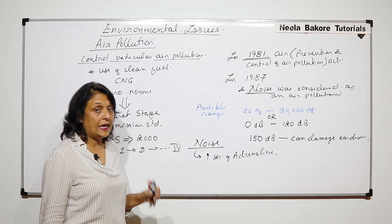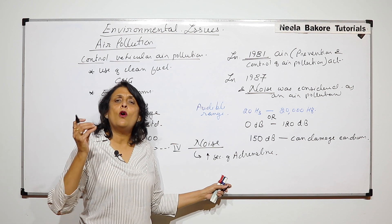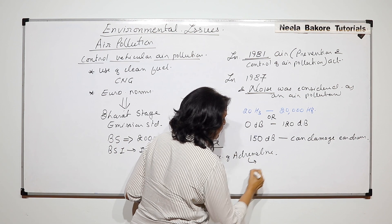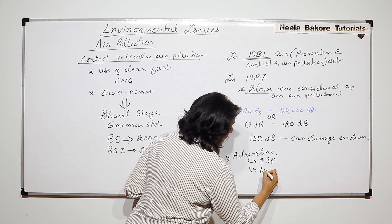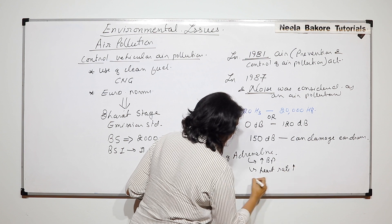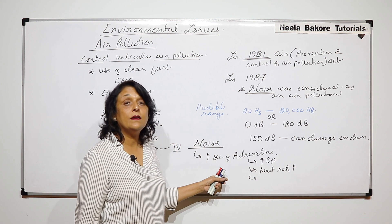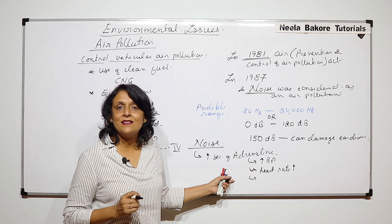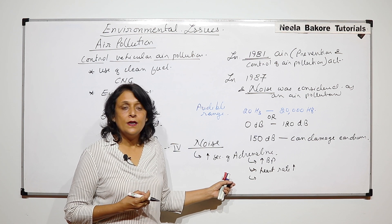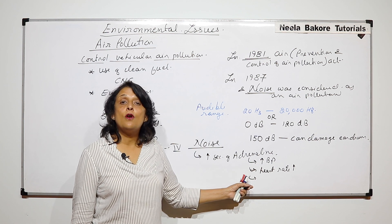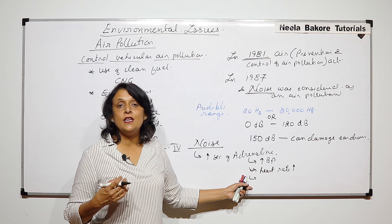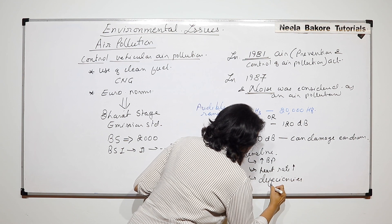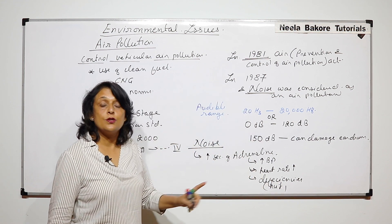If adrenaline level is high, all the functions of adrenaline will occur. Blood pressure increases and heart rate increases. Adrenaline also reduces secretion of saliva, digestive juices, and peristalsis, so a person doesn't feel hungry. If you are not hungry, you won't eat properly, which results in deficiencies, malnutrition, and nutritional deficiencies — all because of elevated adrenaline.